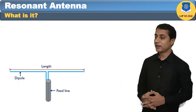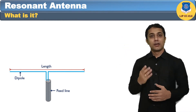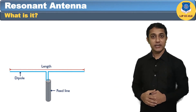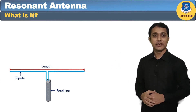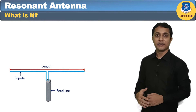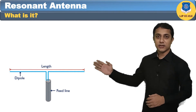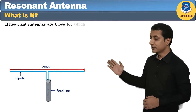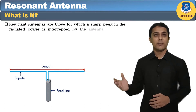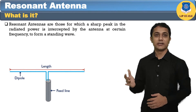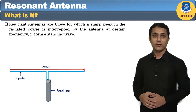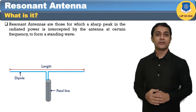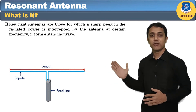Let's see the first antenna, that is the resonant antenna. The resonant antenna is like a resonant transmission line. The dipole antenna is an example of this antenna type. They are open-ended at the far end with resonant length. The term resonant length refers to a multiple of quarter wavelength. The resonant antenna are those for which a sharp peak of the radiative power is received by the antenna at a certain frequency to form a standing wave. The radiation pattern of the radiated wave is not matched with the load impedance in this type of antenna.